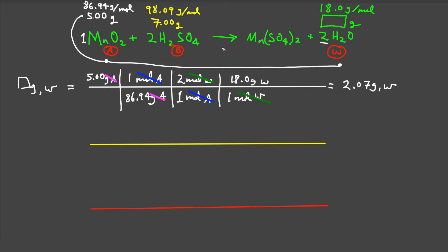But I need to know if that number is greater than or less than the material, the amount of water, that will be produced starting with 7 grams of sulfuric acid. So let us solve that problem.